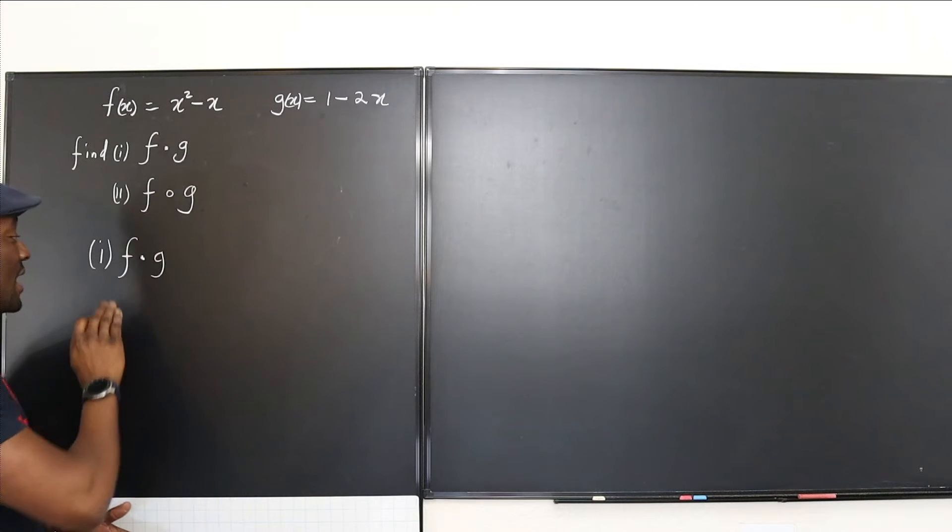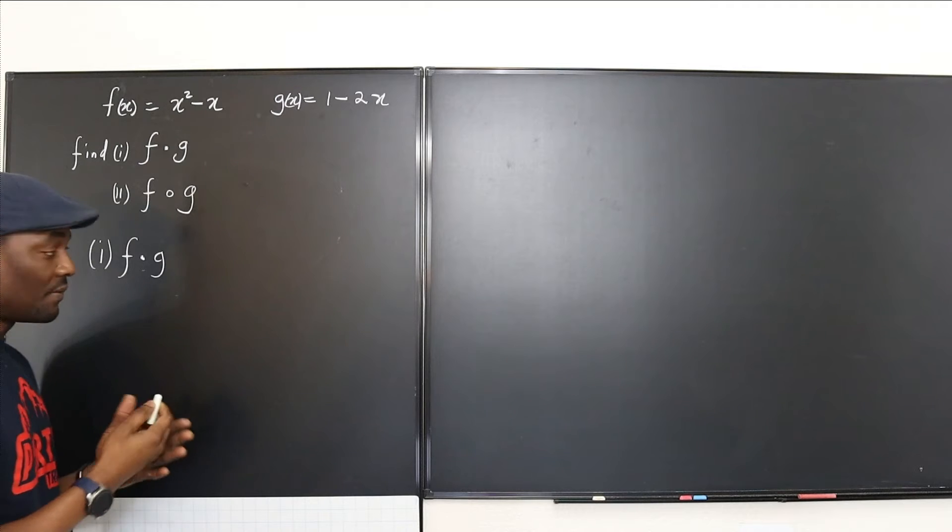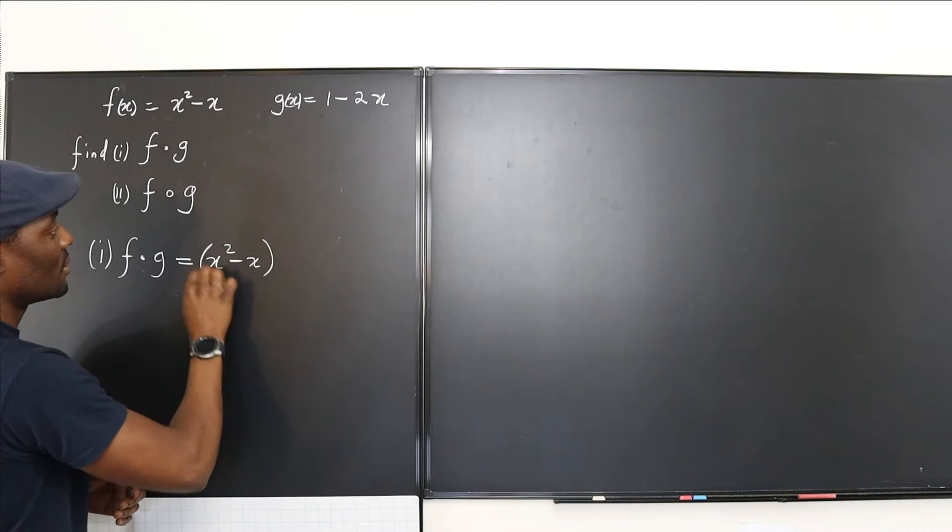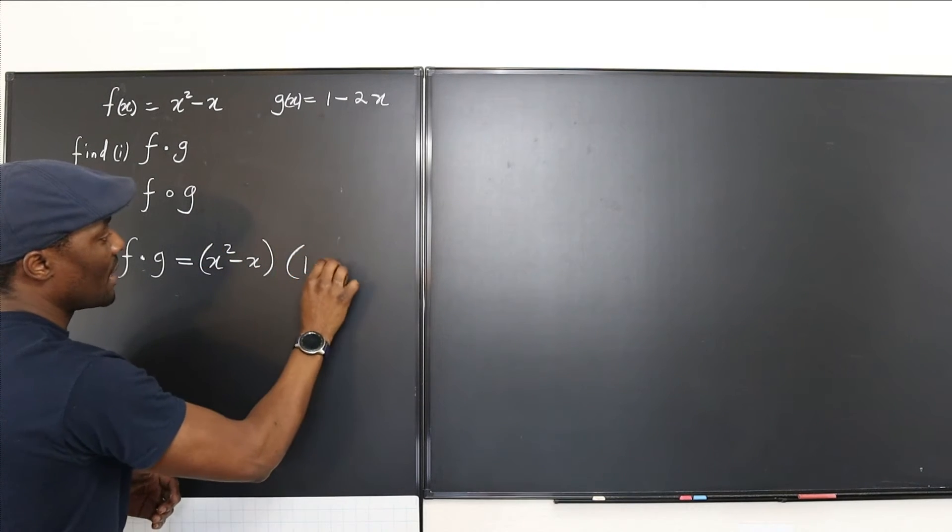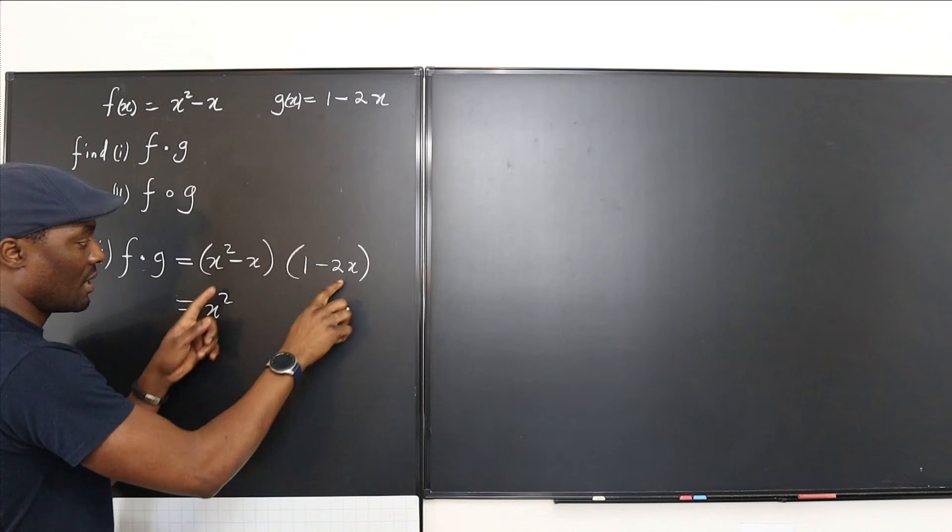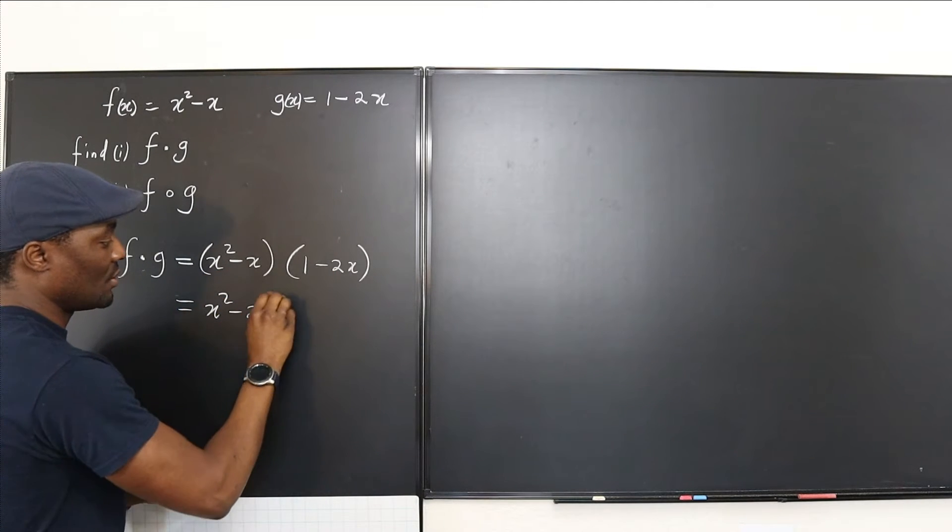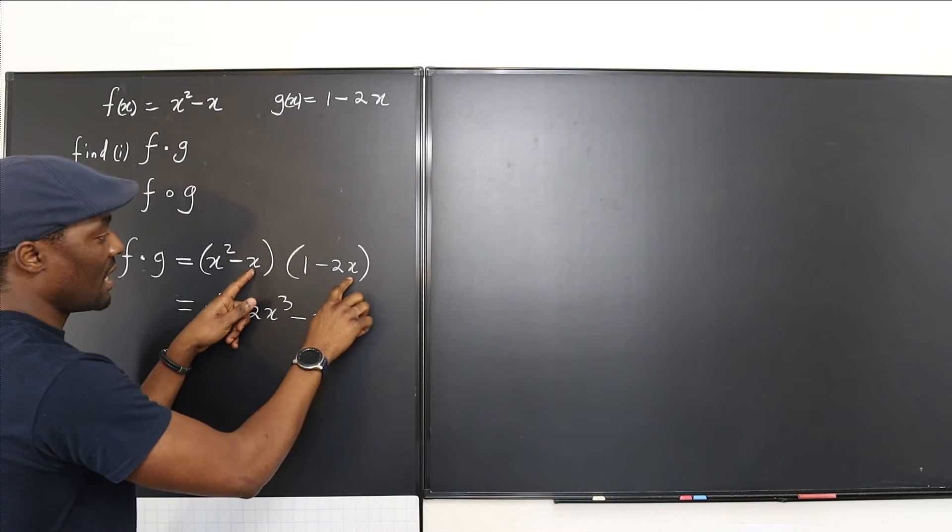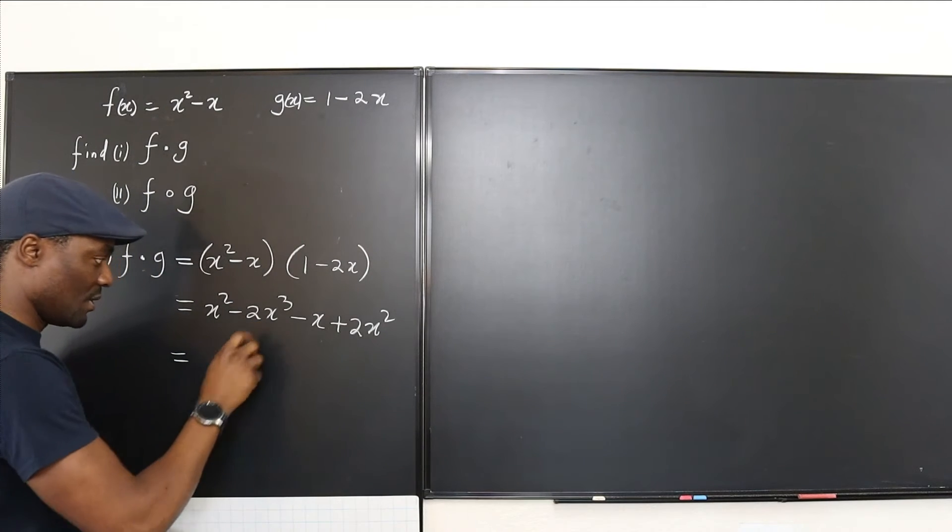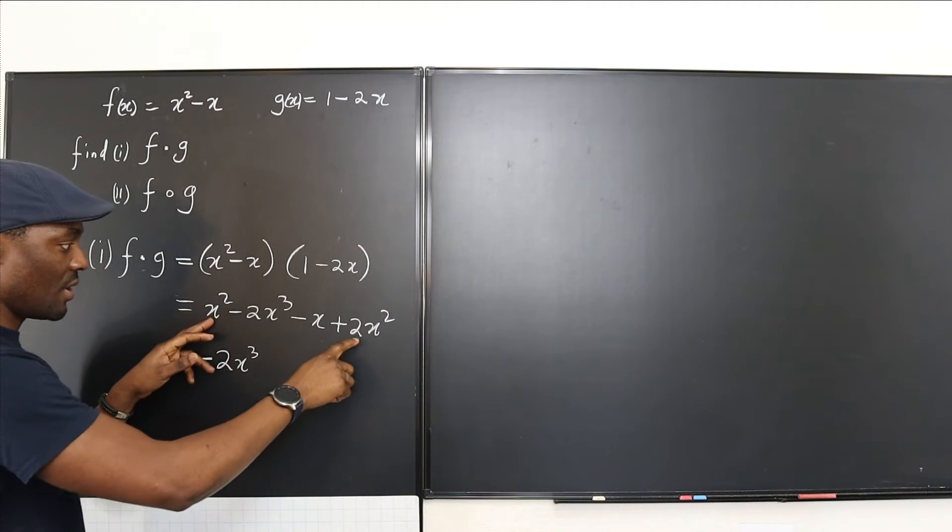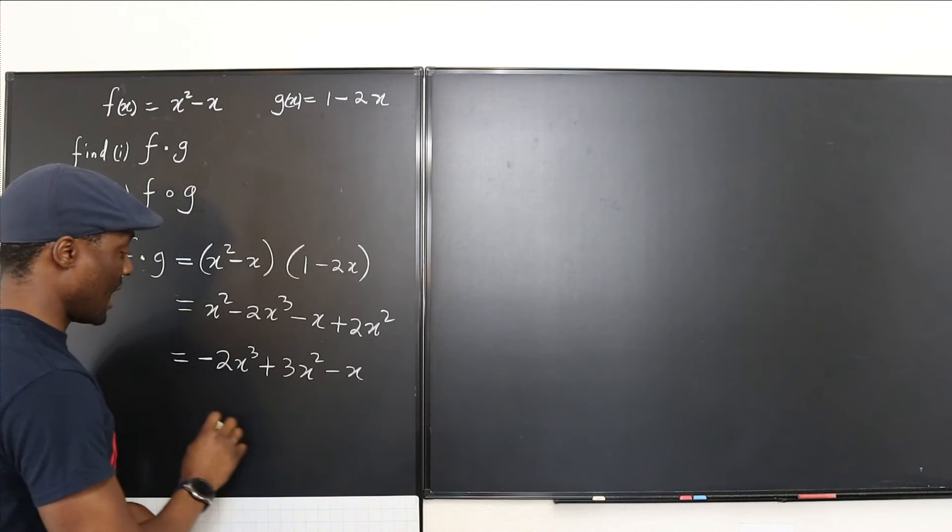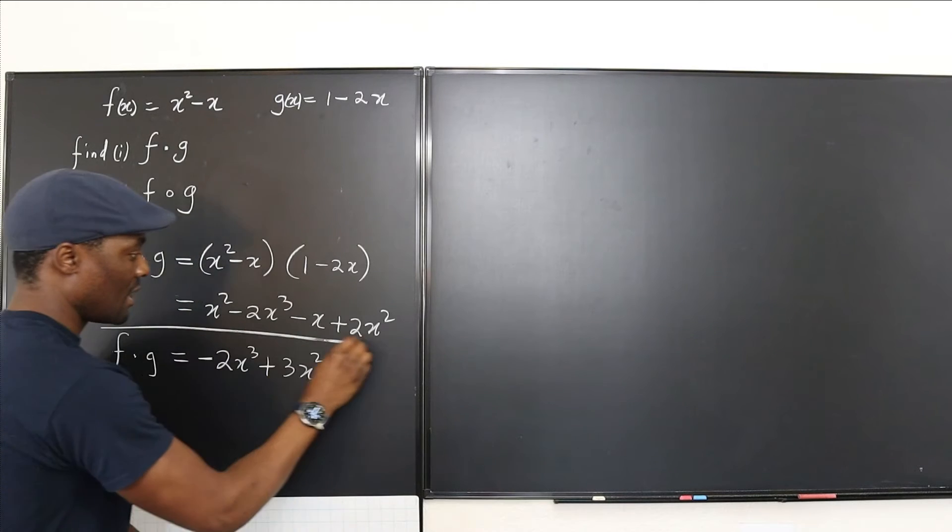So the very first one is f times g. That's how you read this. It's the product of two functions and f times g will simply be what you have here, x squared minus x multiplied by this one, 1 minus 2x. So all we have to do now is multiply. This is going to be x squared, and x squared times this would be negative 2x cubed. Then this is going to be negative x, and this will be positive 2x squared. Well, if we arrange it in order, which is in standard form, this is going to be the first term, negative 2x cubed, and then I'm going to have plus 3x squared minus x. And basically, that's f times g. That's what we get.